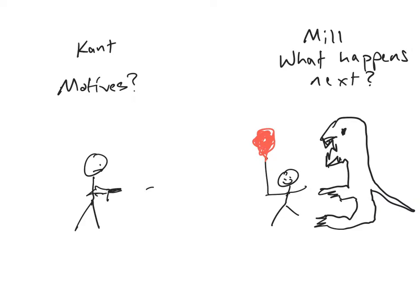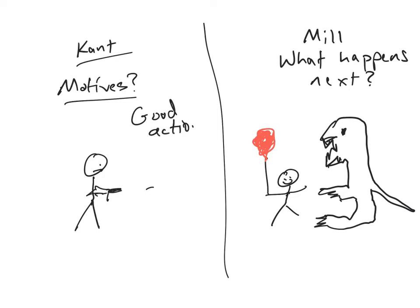For Kant, on the left side, if the man is successful at shooting the monster or the child, it doesn't matter. What matters are the motives. So Kant wants to know something like: is the man following a maxim such as, 'when it's possible, protect innocent life from harm'? If that's why the man is shooting, that's all Kant needs to know — end of story. It's a good action because that is a maxim that you could will that everyone follow.